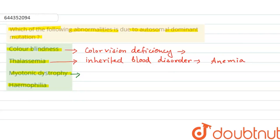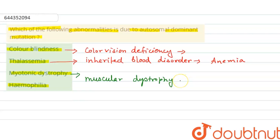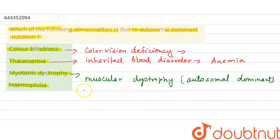The next option is myotonic dystrophy, which is a type of muscular dystrophy — a group of long-term genetic disorders that impair muscle function. It is a genetic disorder inherited in an autosomal dominant manner, so the right answer is myotonic dystrophy.